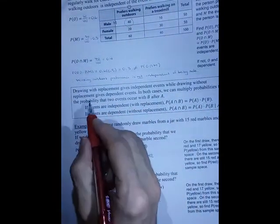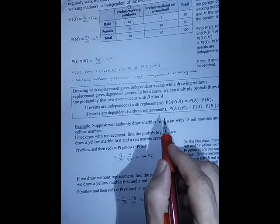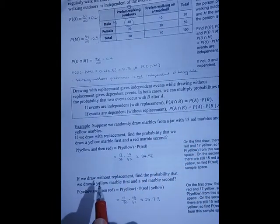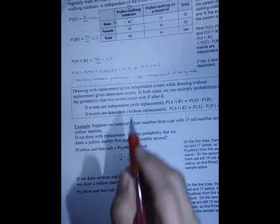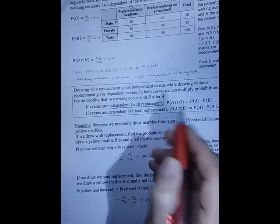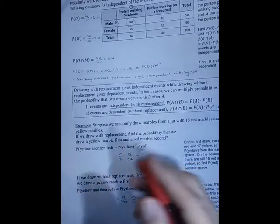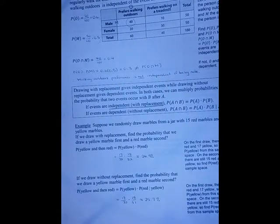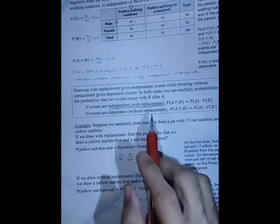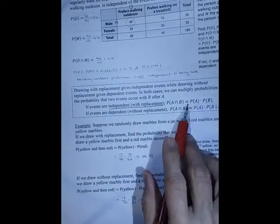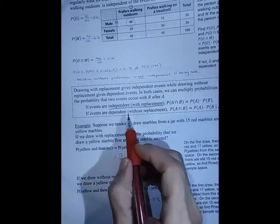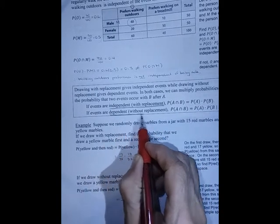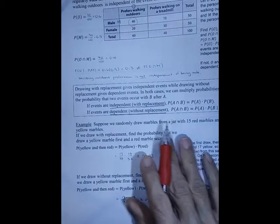Drawing with replacement gives independent events, while drawing without replacement gives dependent events. In both cases, we can multiply the probabilities to get the probability that two events occur with B after A. If we replace objects after drawing, the events are independent and we simply multiply the two individual probabilities. If we don't replace them, the events are dependent and we have to account for how the first draw affects the second.